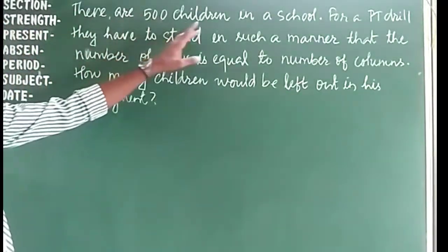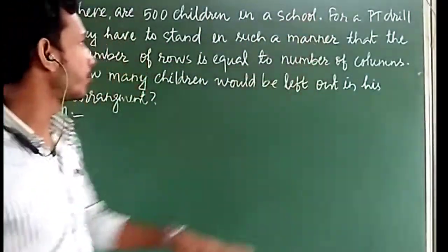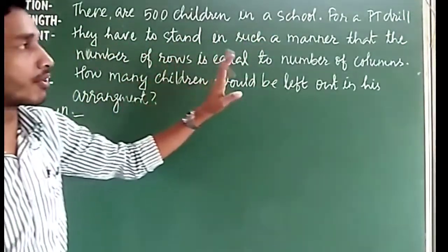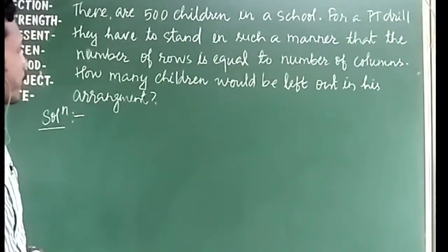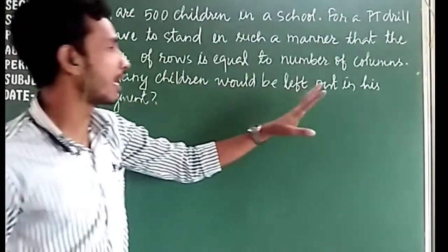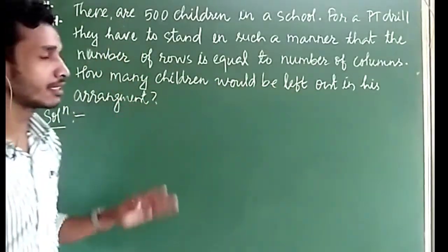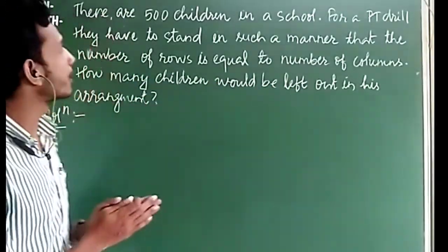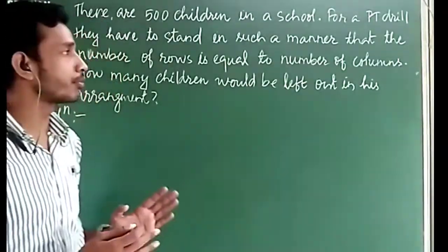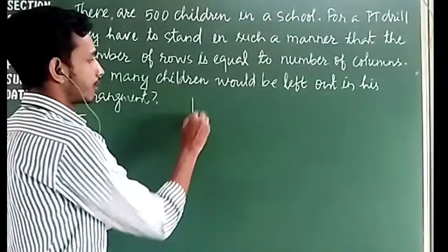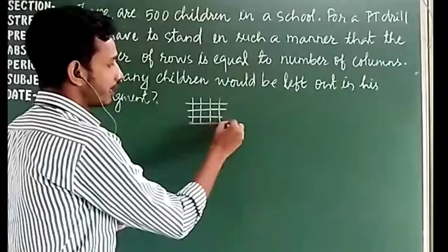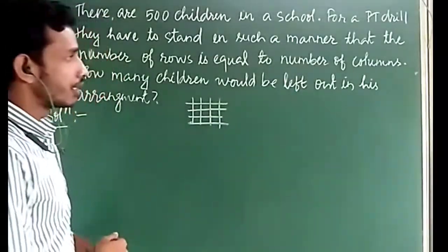There are 500 children in a school. For a PT drill, they have to stand such that the number of rows and the number of columns are equal. We need to find how many children could be laid out in this arrangement.